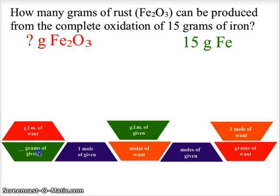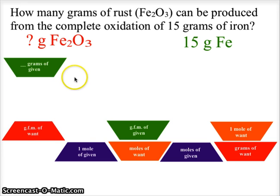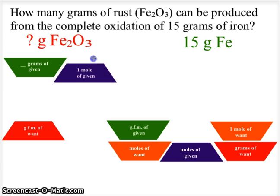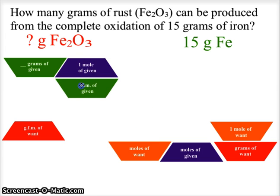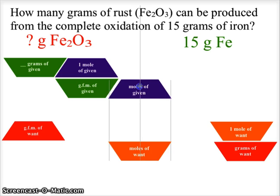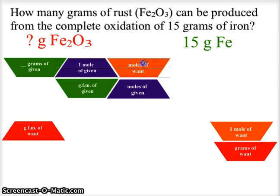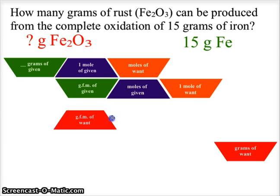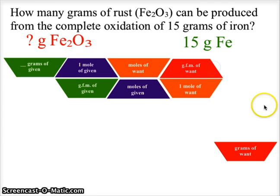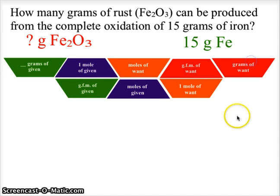We're going to start with the grams of given. Once we have the grams of given, we want to get the moles of given — so we compare one mole of given to the gram formula mass, or molar mass, of that given value. Then we convert to moles of what we want, cancel the moles of given, put one mole on the bottom and the gram formula mass on top, and get our final solution in grams of what we want. This is our format for the roadmap for converting grams to grams.